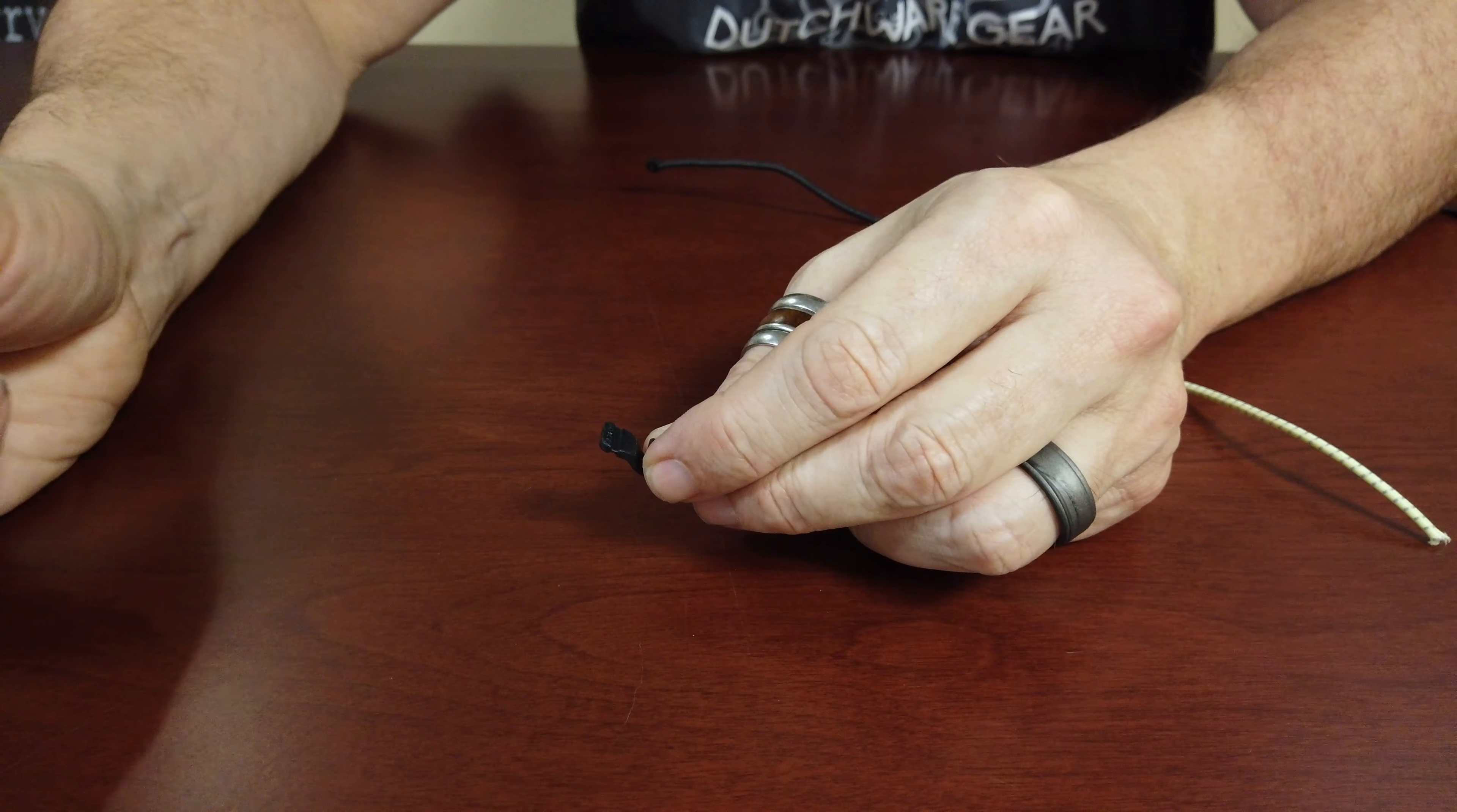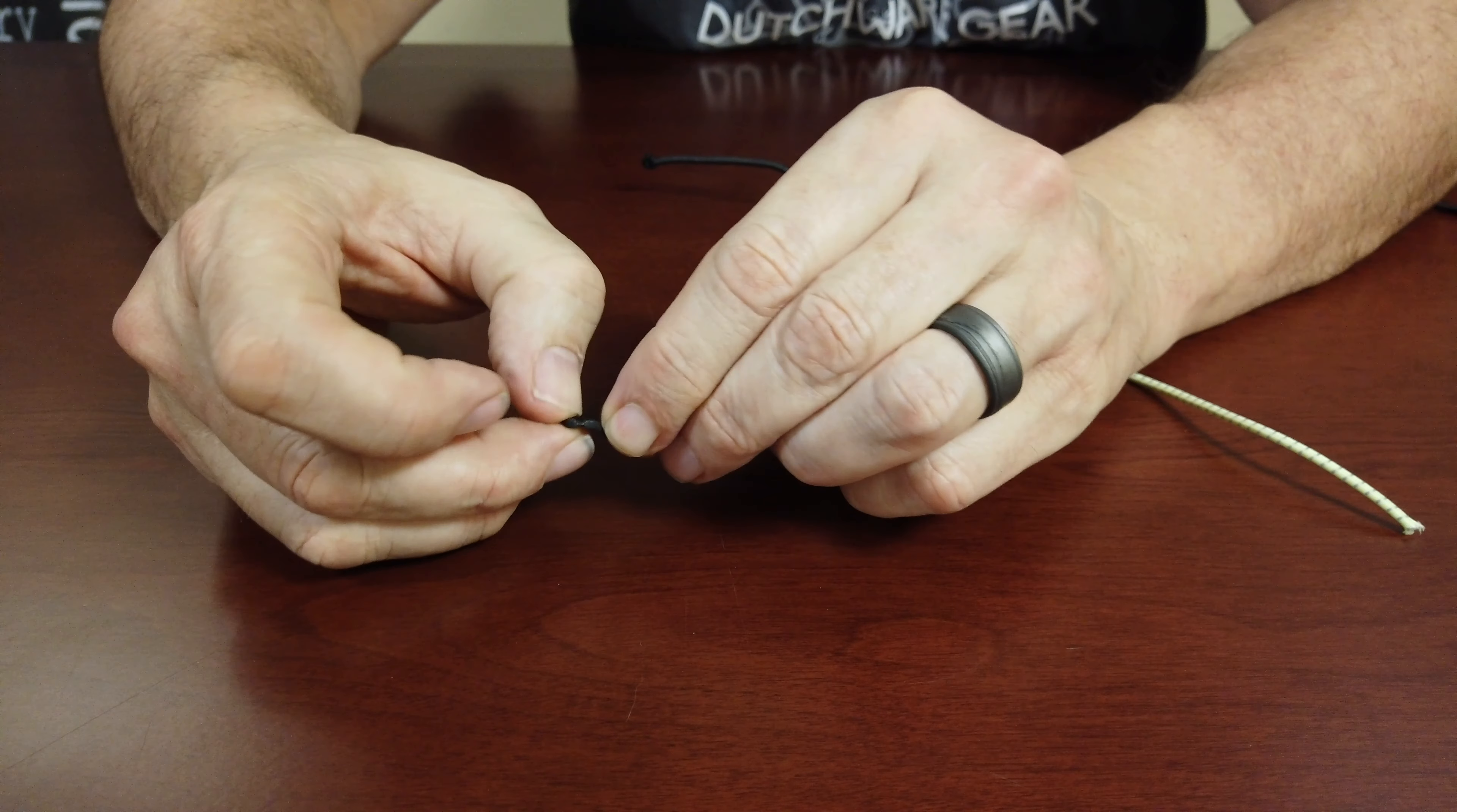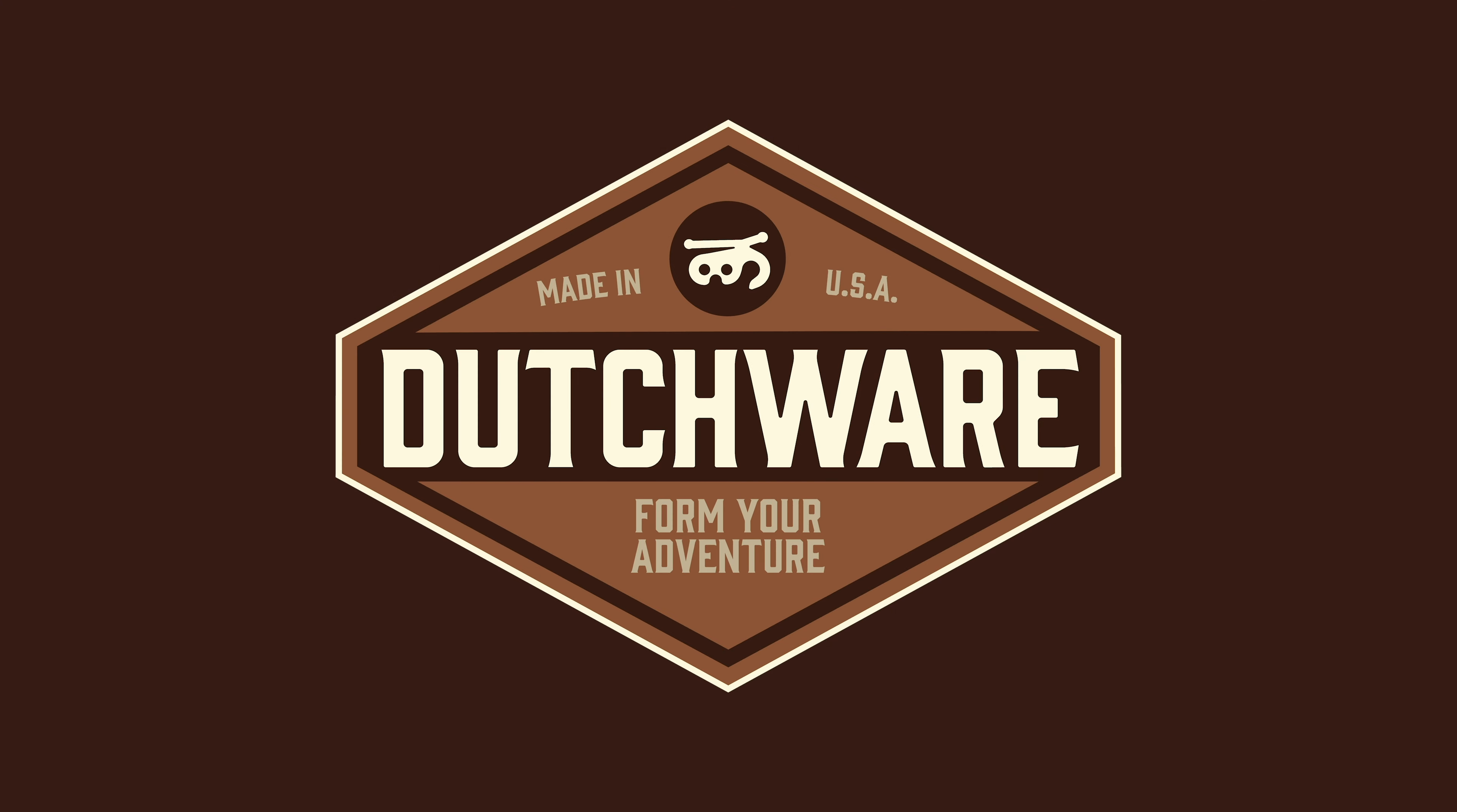You can either sew it to a piece of grosgrain that gets sewn to your hammock or your pack or whatever you want to hook onto. Or even after the fact, you could simply sew this onto the side of your hammock or, of course, your backpack.